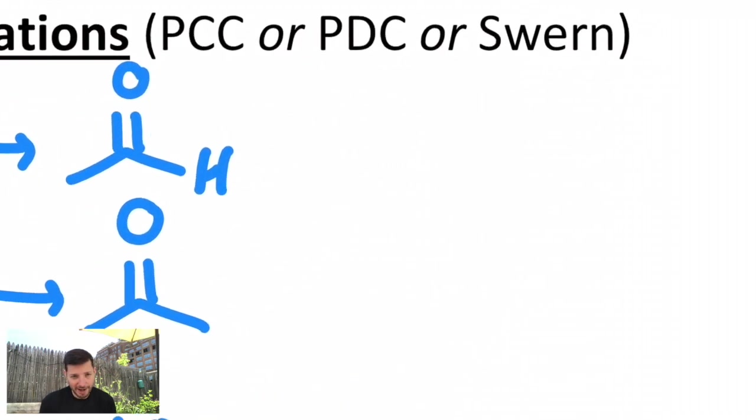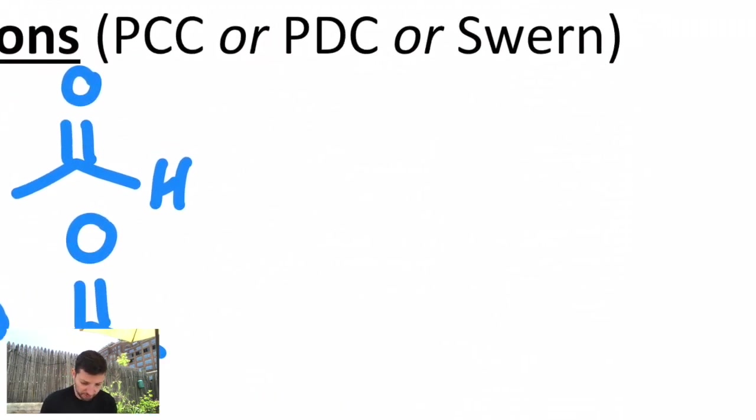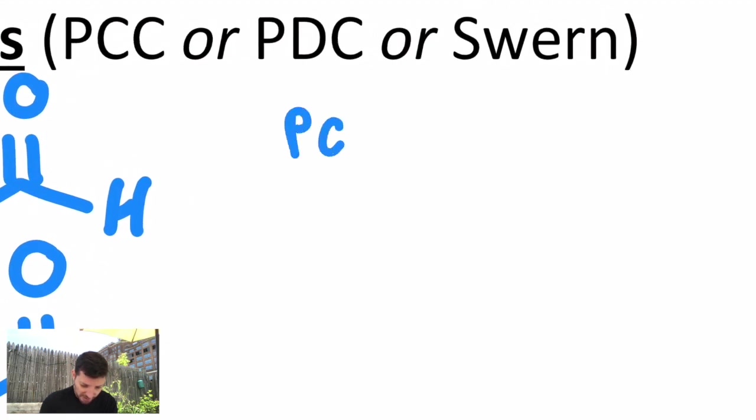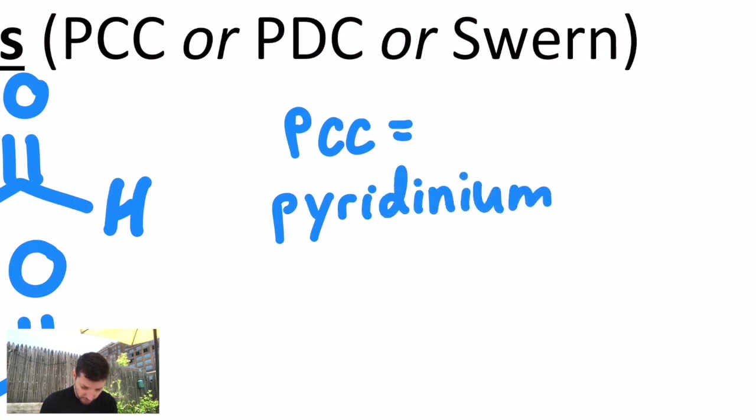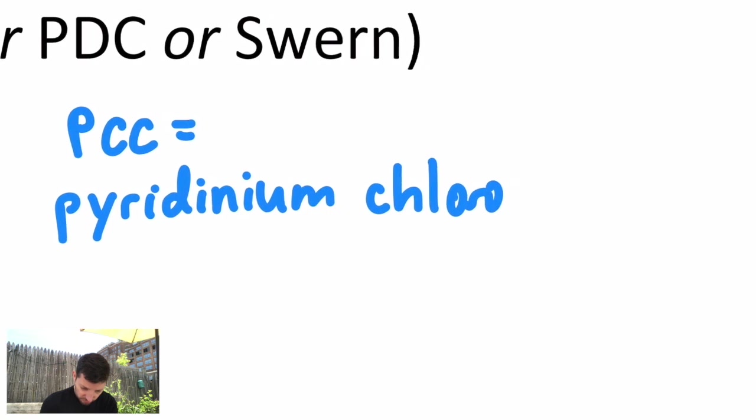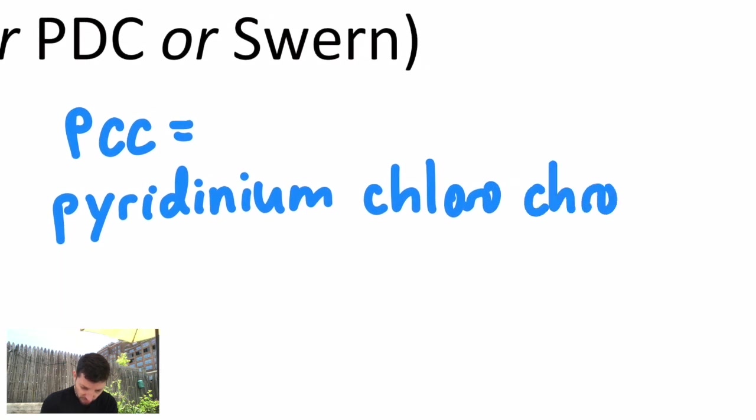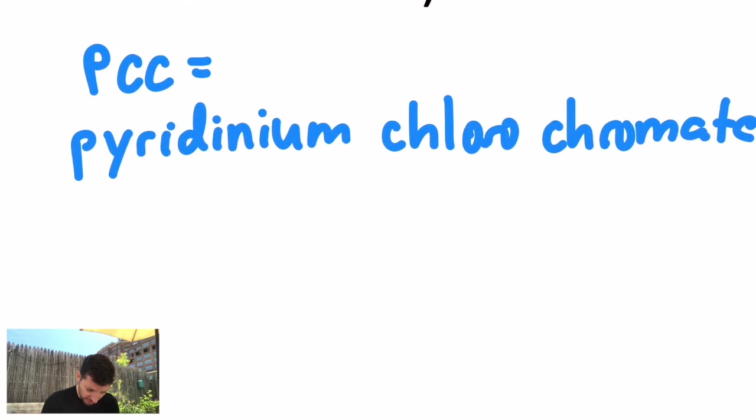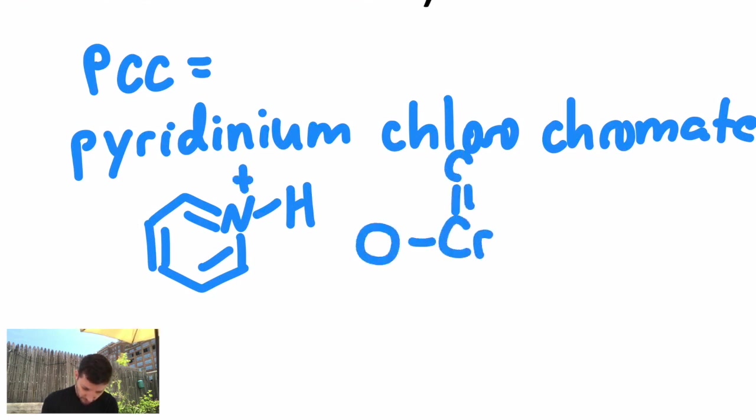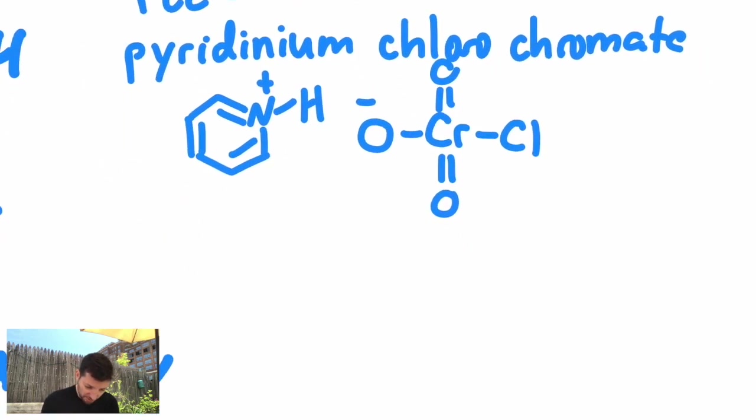So we get aldehydes and ketones from oxidations with these reagents. The reagents we often write out as the acronym or the person's name because they're a little bit more complicated, but I'll show you what some of them are. PCC stands for pyridinium chlorochromate, which is a different chromium-based reagent. It's got a pyridine, which is a benzene with a nitrogen instead of a carbon at one of the positions, but it's actually a pyridinium, so it's protonated with a positive charge. And a chlorochromate looks like this.